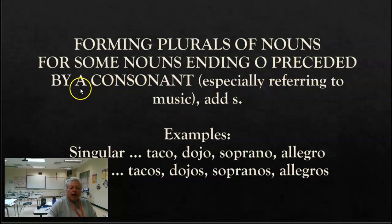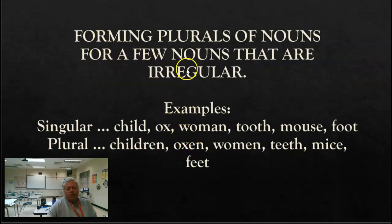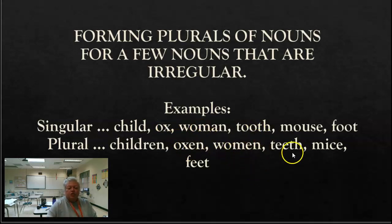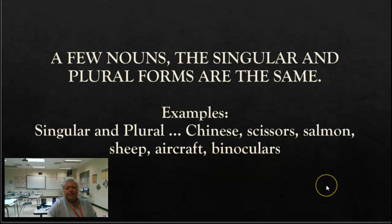For some nouns ending in O preceded by a consonant, especially those referring to music, you add just an S. Taco — not music, but you add S: tacos. Same with doho — dohos. Soprano and allegro are both music terms, so they also just add an S. There are a few nouns that are irregular: child becomes children, ox becomes oxen, woman is women, tooth is teeth, mouse is mice, foot is feet. And some nouns are the same whether singular or plural: Chinese, scissors, salmon, sheep, aircraft, binoculars, deer.